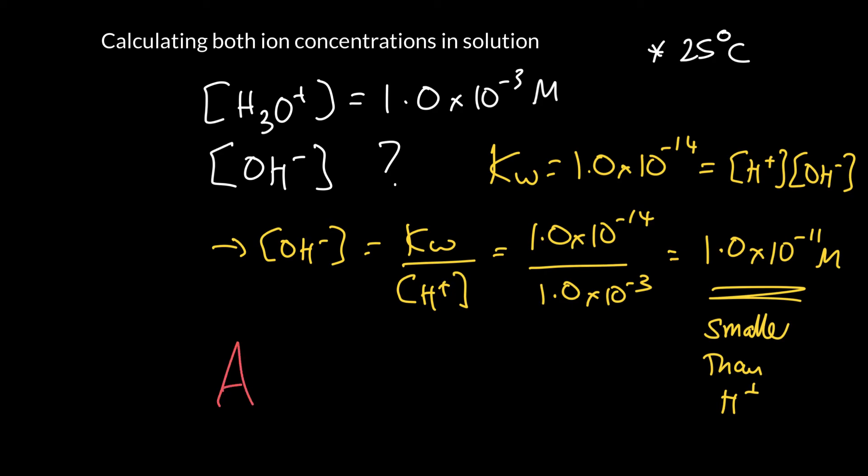We have an acidic solution because the concentration of H plus is much, much bigger than the concentration of OH minus. So don't be fooled. The exponent is bigger, but it's minus 11 compared to minus 3. So that's actually 8 orders of magnitude smaller. So that's 100 million times smaller than this one here. So that's why it's an acidic solution.